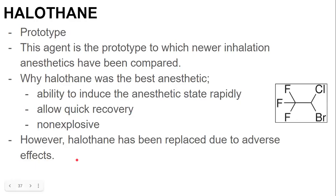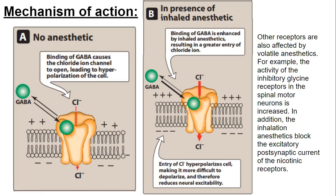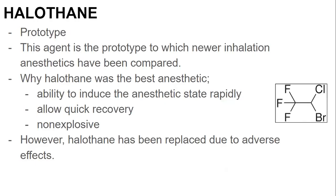When GABA binds to a receptor, it makes the inside of the membrane go more negative — more inhibition occurs. This means the cell becomes hyperpolarized. With inhalation anesthetics, GABA binding is enhanced, chloride ions influx more, causing more hyperpolarization and reduced excitability. The inhibitory glycine receptor in spinal motor neurons is also increased, and inhalation anesthetics block the excitatory post-synaptic current of nicotinic receptors.